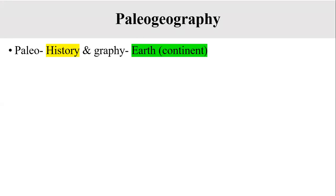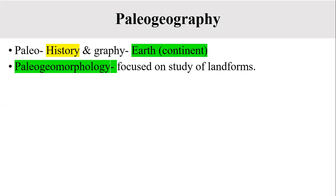Paleogeography also describes the similar fauna present on both past and present continents. If the fauna on past and present continents were the same, it means at one point both continents were a single continent that later diverged. The second terminology is paleogeomorphology. It comprises three words: paleo means history, geo means earth, and morphology means structure. It focuses on the study of landforms present on the Earth.